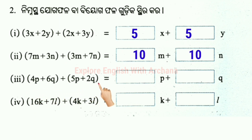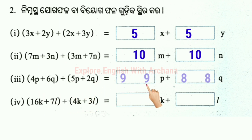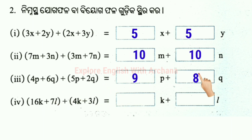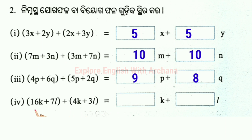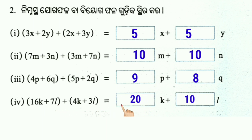4p plus 6q plus 5p plus 2q. 4p plus 5p equals 9p. 6q plus 2q equals 8q. Number 4: 16k plus 7l plus 4k plus 3l. 16k plus 4k plus 3l.